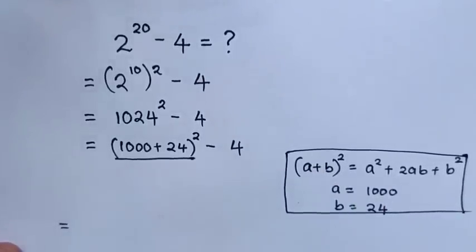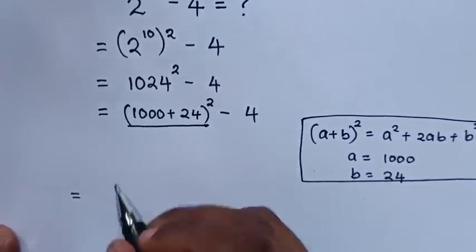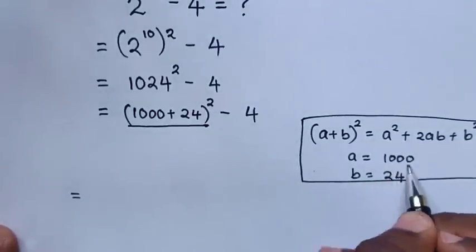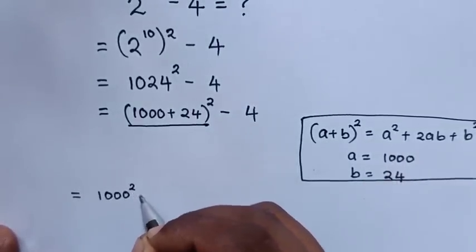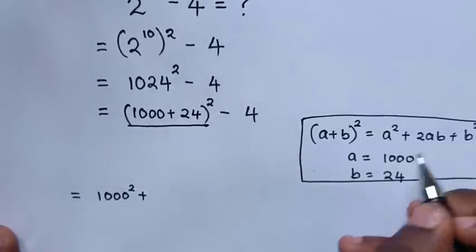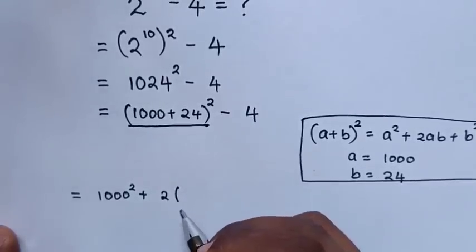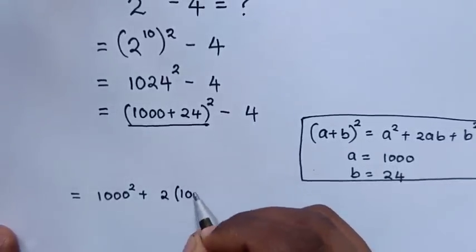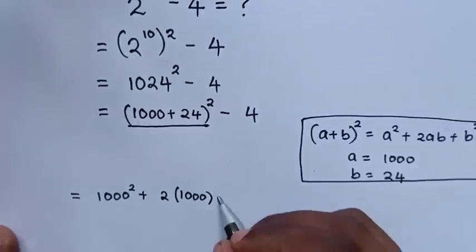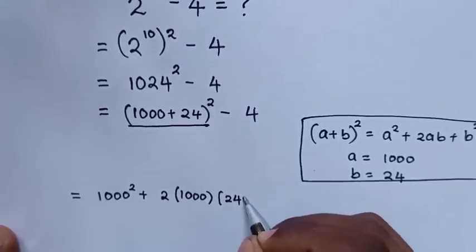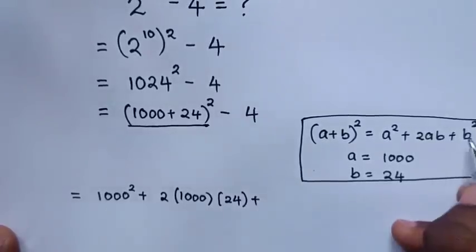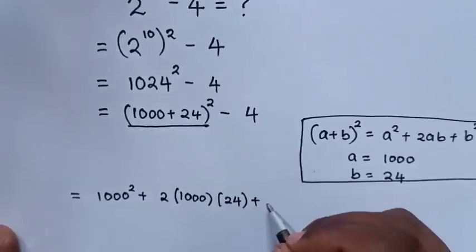This will equal a square, which is 1000 square, plus 2ab. So it will be 2 times a is 1000 times b is 24, plus b square. B square will be 24 square.